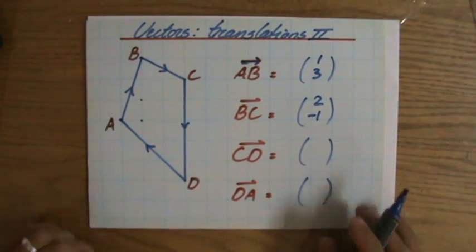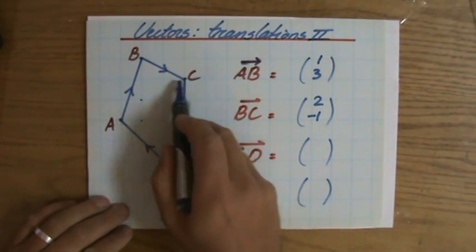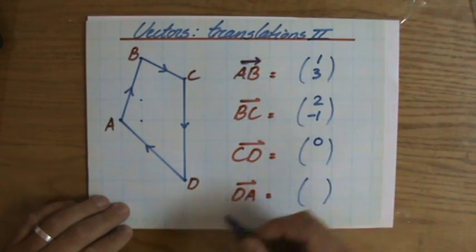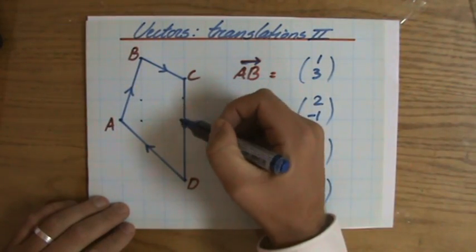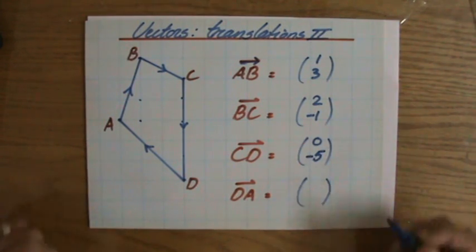From C to D, I'm starting at C and I'm finishing at D. First of all, my horizontal translation. How do I move horizontally? Well, I don't, so let's put a zero there then. And I'm going one, two, three, four, five down, which means minus five.